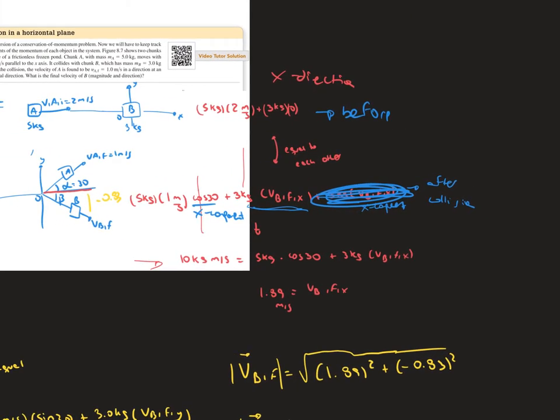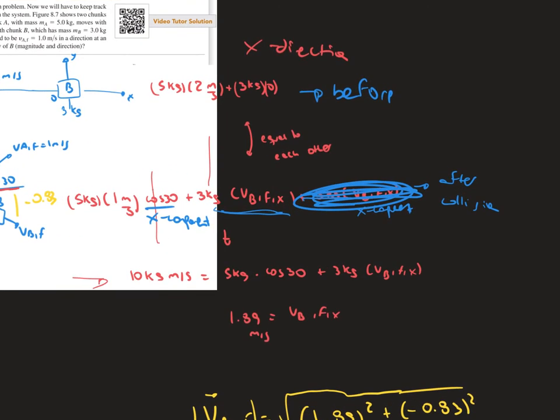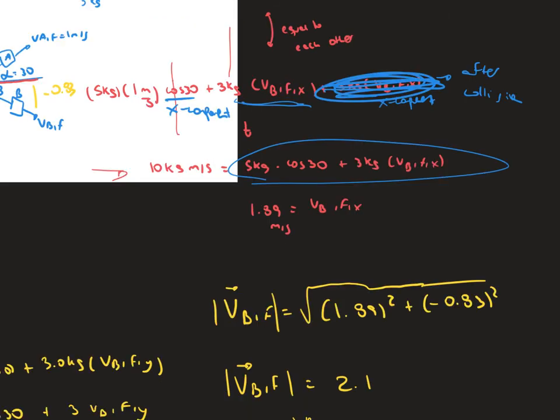That means that we can equal both values to each other. So in the first case up here, we got 10 kilograms, and in the other one we got what's written here. As we solve for the final velocity of object B in the x-direction, we end up with 1.89 meters per second.